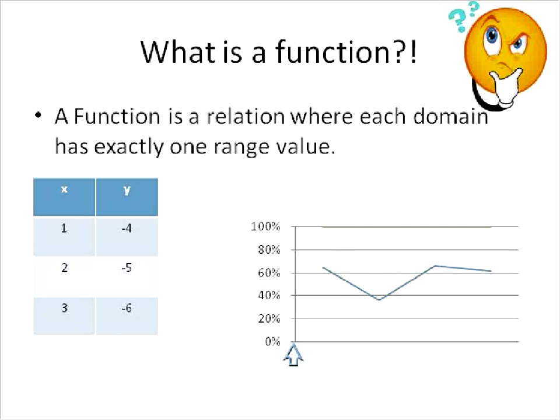In a graph, you would look over and see that each x value has only one y value. This x value has that y value. We go over to this x value, it would have that y value. So each x value has only one or exactly one y value. Each domain has exactly one range value.